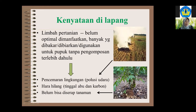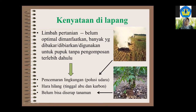Daun menguning karena nitrogen di dalam tanah digunakan oleh mikroorganisme untuk menguraikan kulit kopi yang cukup keras. Nitrogen yang harusnya diserap oleh tanaman digunakan oleh mikroorganisme untuk menguraikan kulit kopi karena kulit kopinya kurang N. Kalau saya tanya ke petani, biasanya mereka bilang daunnya menguning dulu — itu tanda bahwa tanaman kopi kekurangan nitrogen. Setahun berikutnya baru subur. Kenapa tidak kita komposkan dulu baru diaplikasikan ke tanaman, sehingga langsung bisa diserap?